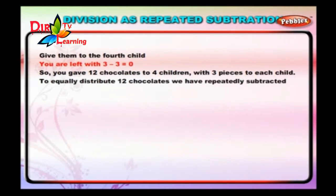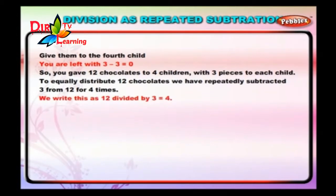To equally distribute 12 chocolates, we have repeatedly subtracted 3 from 12 for 4 times. We write this as 12 divided by 3 is equal to 4.